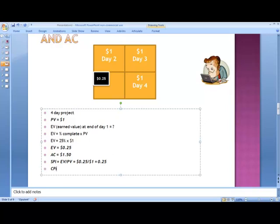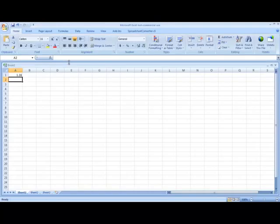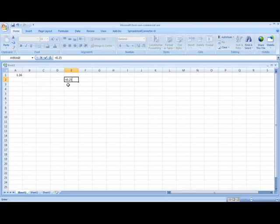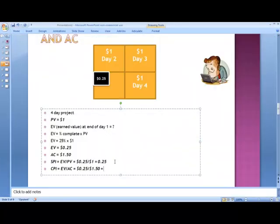Now, talking about CPI, CPI is equal to EV divided by AC, and that's equal to 0.25 cents, or dollars I beg your pardon, which is 25 cents divided by AC, which is $1.50. So if you do the math, 0.25 divided by 1.5, and that's equal to 0.167.